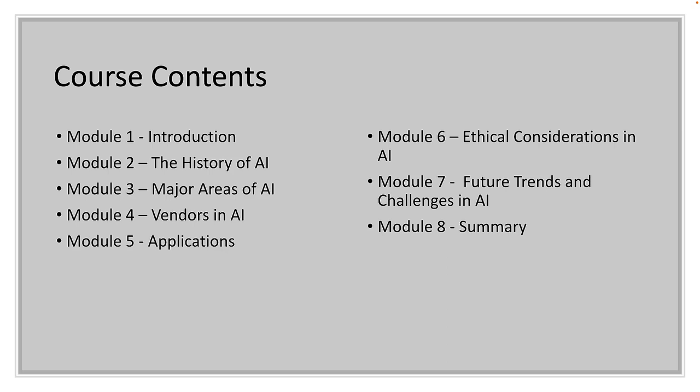In module three, we're going to look at the major areas of AI — the types of systems that are out there, things like machine learning, vision systems, robotics, and a bunch of different areas that are really major subsets of what's going on in AI today.